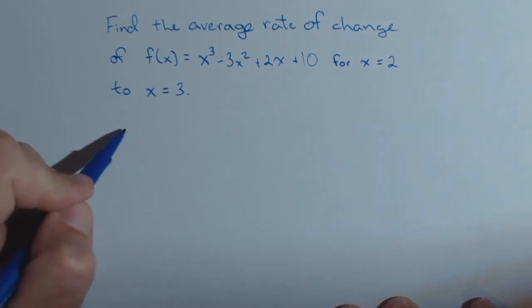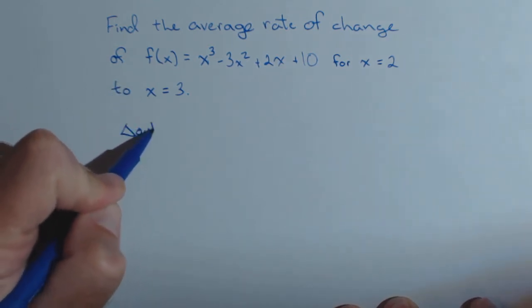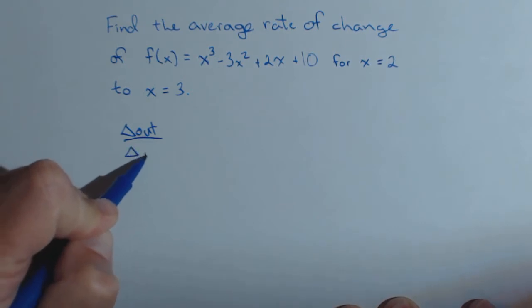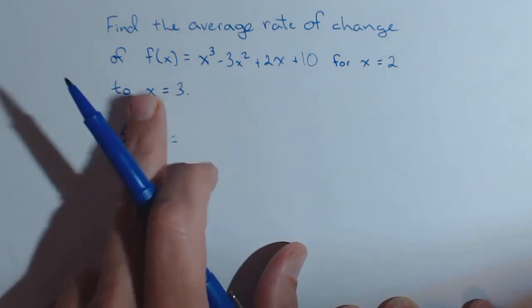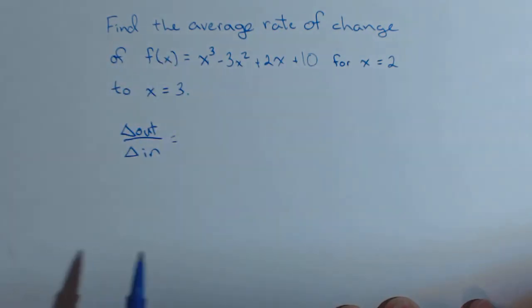Average rate of change is change in output over change in input. So we just need to find that for the, we have the inputs 2 and 3 here, we just need to find the corresponding outputs. So first thing I'm going to do is calculate